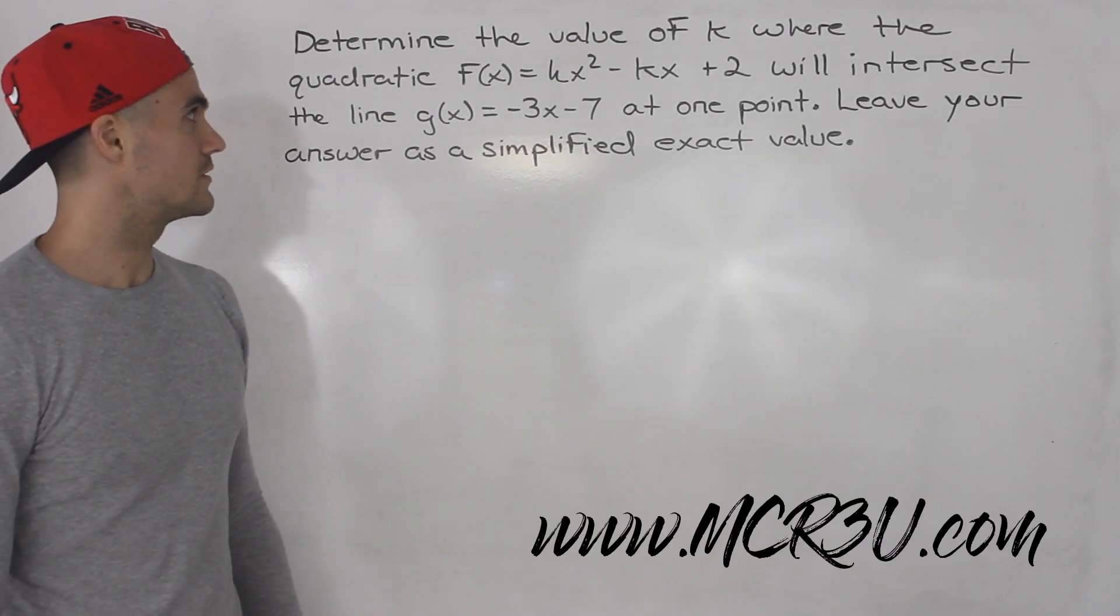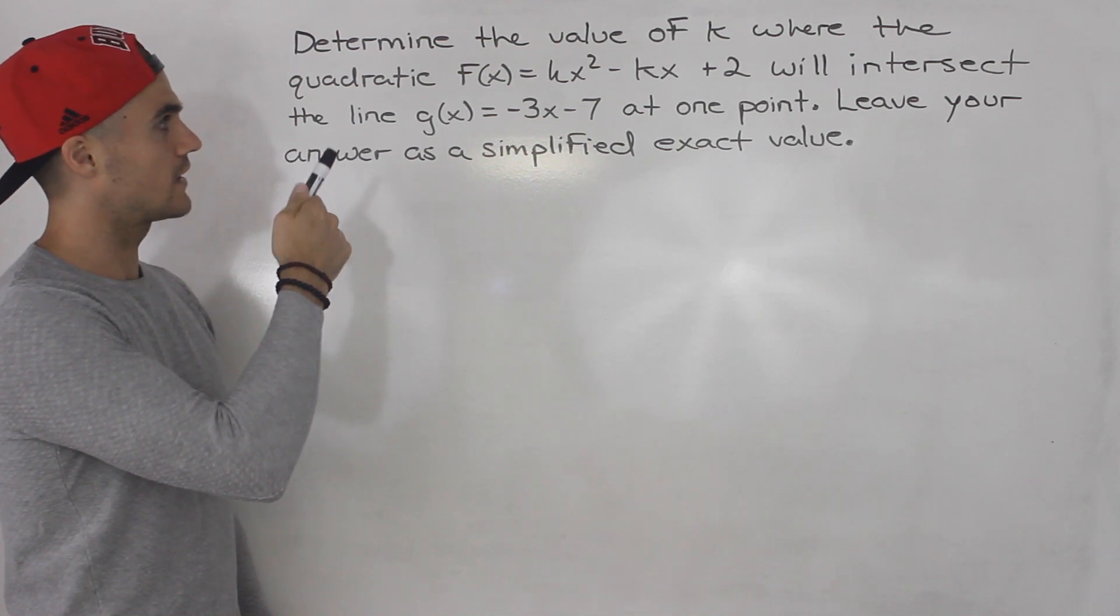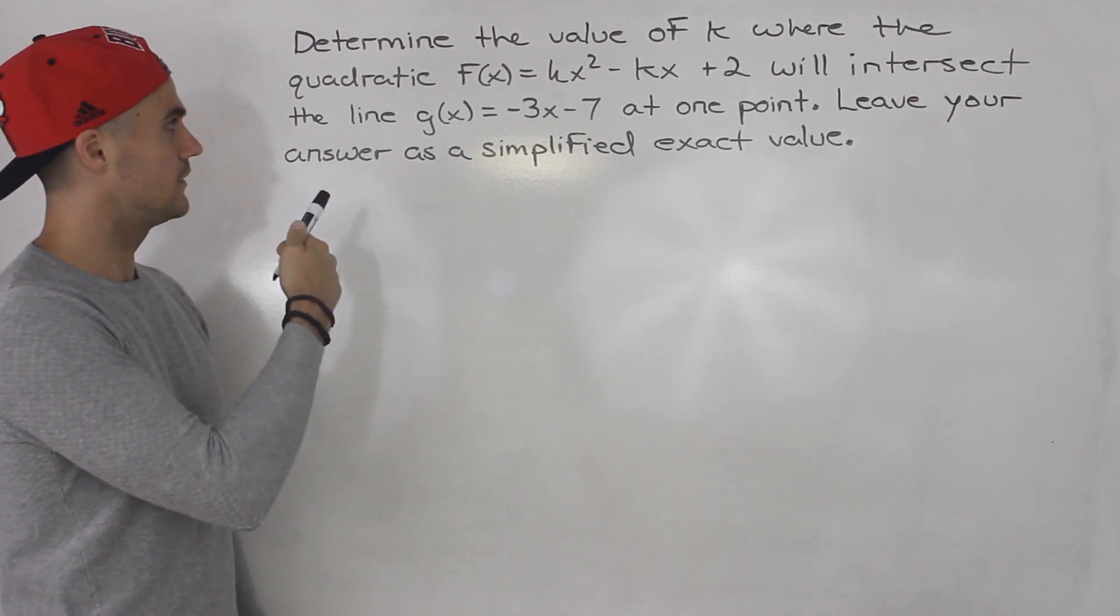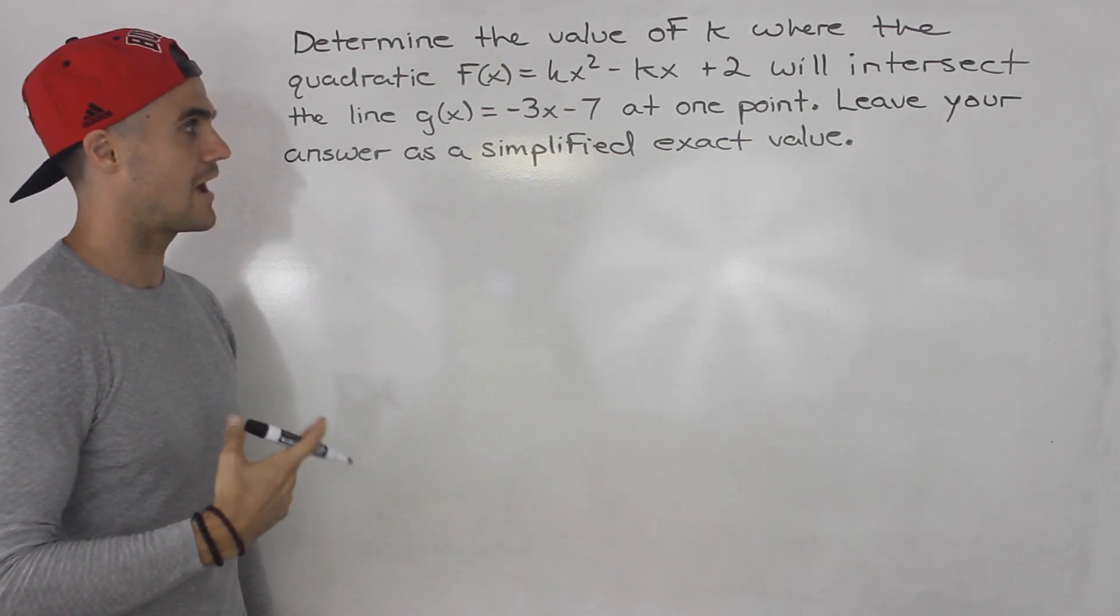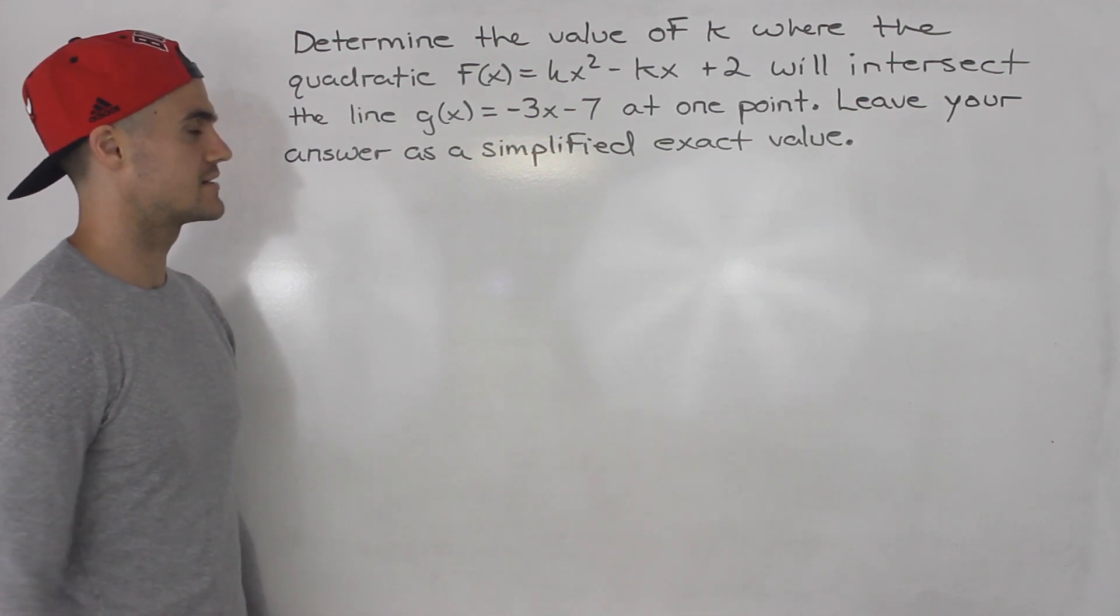Moving on to the next question on the test. We have to determine the value of k where the quadratic f(x) equals kx² minus kx plus 2 will intersect the line g(x) equals negative 3x minus 7 at one point. Leave your answer as a simplified exact value.